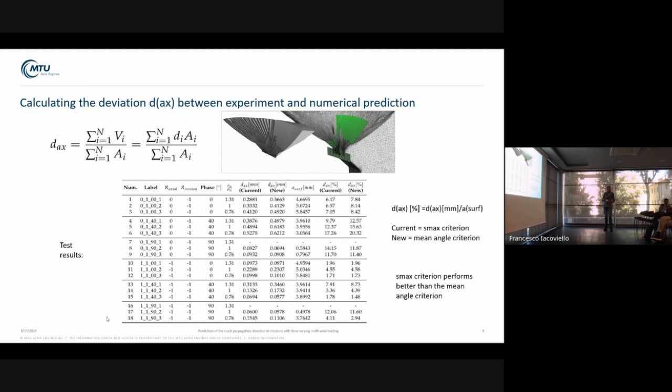For this purpose, the volume in between the numerical prediction, which is green here, and the test, which is this triangulation, has been calculated. Based on this, a relative difference in percent has been determined.